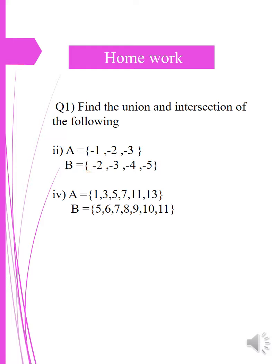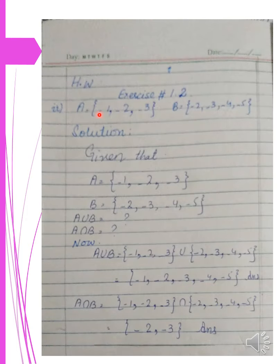If you have done your homework, match it now. In question number 2, there are two sets given. For A union B, you have minus 1, minus 2, minus 3, minus 4, minus 5.